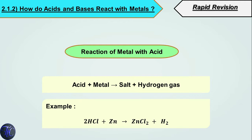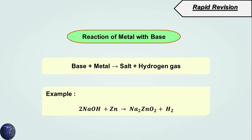Now let's see how acids and bases react with metals. When acid reacts with metal, the products are salt and hydrogen gas. For example, hydrochloric acid reacting with zinc produces zinc chloride (salt) and H2 (hydrogen gas). When base reacts with metal, it also produces salt and hydrogen gas. For example, sodium hydroxide reacting with zinc produces sodium zincate (Na2ZnO2) and hydrogen gas (H2).